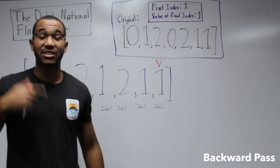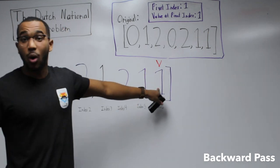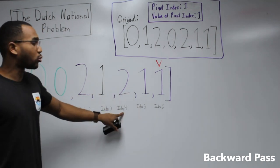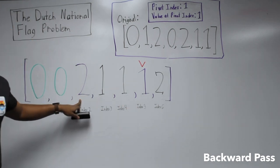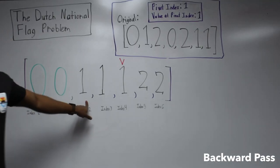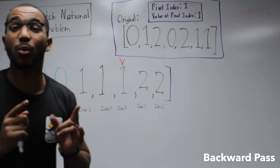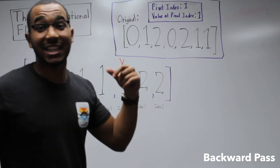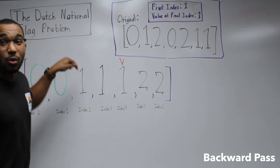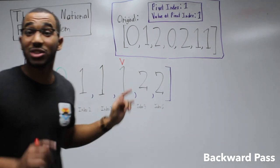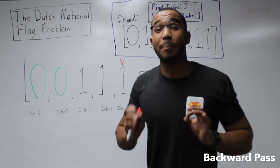Now let's go backwards and place all items greater than our pivot value of one. We set our placement pointer at the end and scan backward. Is one greater than one? No. Is one greater than one? No. Is two greater than one? Yes — swap index four and index six. Is one greater than one? No. Is two greater than one? Yes — swap index two and index five; placement moves to index four. We hit zero: zero is less than the pivot, so we're encroaching on the lesser region — backward iteration stops.